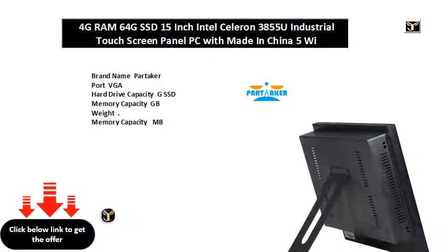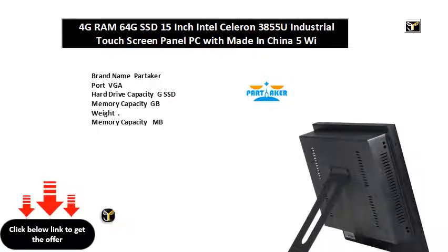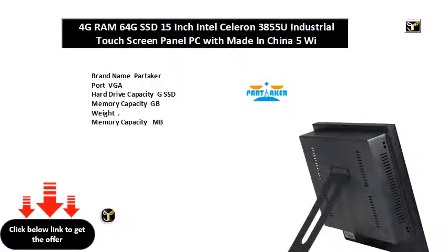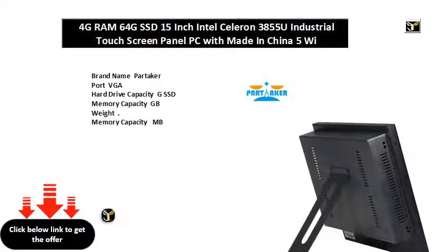Display type: touch screen. Model number: Elite Z. Color: black. CPU: Intel Celeron processor U. Operating system: Windows or Linux. Physical dimension: MM. Resolution. Memory capacity max: G RAM. Product status: stock.